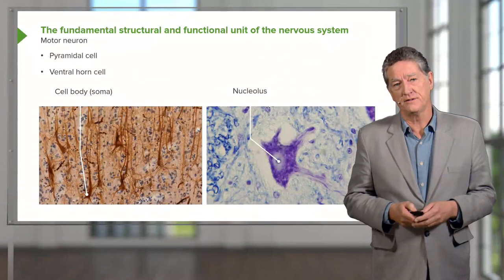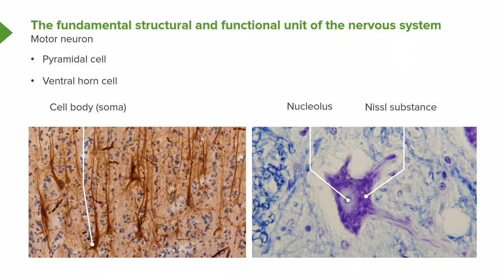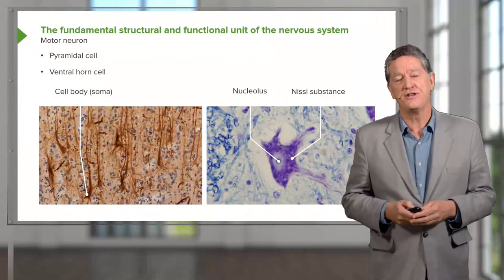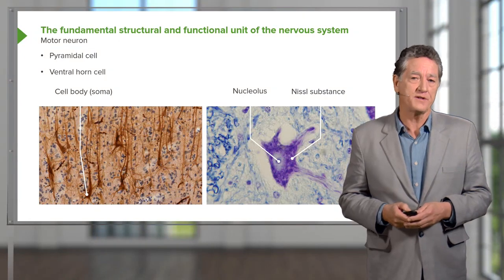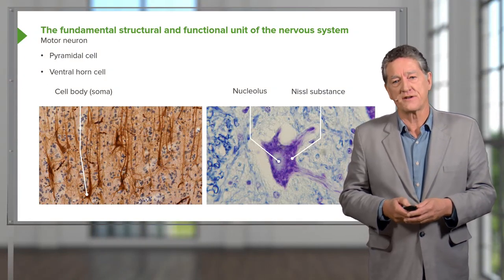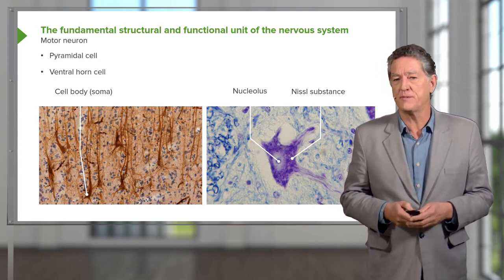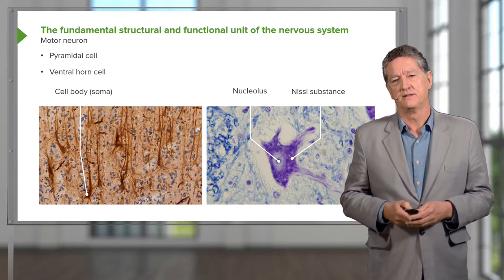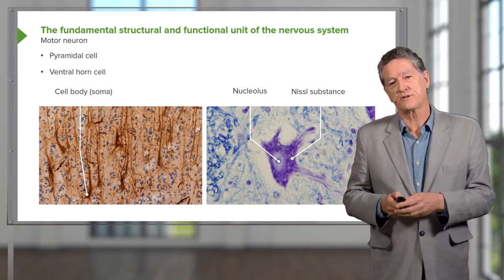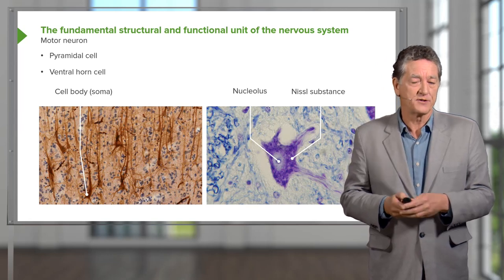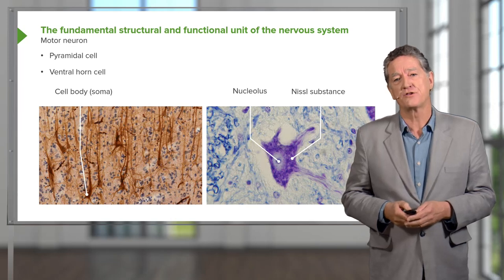Neurons are not just electrical cables — they manufacture lots of proteins and other substances. The ventral horn cell is making a lot of protein, including neurotransmitter substances that enable the impulse to transfer from one neuron to another at a synapse, or from the motor end plate to the muscle. Before the axon carries an impulse, information is received by the cell body through dendritic branches called dendrites, and then the transmission goes down the long process labelled as the axon.